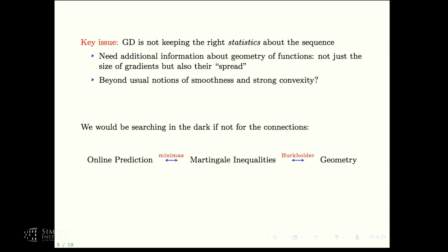We need additional information about the geometry of the functions — not just the size of the gradients, which is what mirror descent keeps in memory, but somehow the spread of the gradients. Can we go beyond the usual notions of smoothness and strong convexity? We would be searching in the dark for the right geometric notion if not for the following fundamental connections: we start with online prediction, go to its minimax dual as a two-player game, appeal to the von Neumann minimax theorem, and get a set of martingale inequalities to certify.